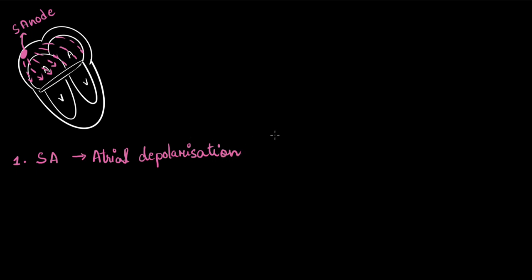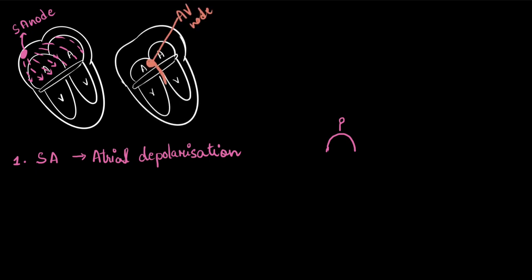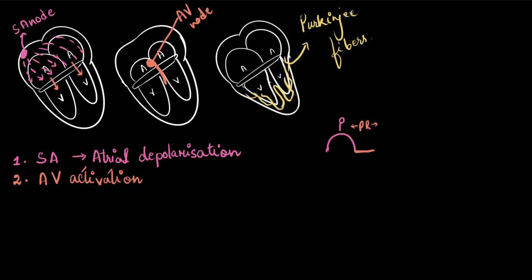Now, this event is shown by the electrocardiograph as an inverted U-shaped curve. We call it the P wave. Now, after the atrial depolarization, the next event is the AV node activation. And this activity is shown by the electrocardiograph as a single straight line. Okay? And this straight line is called the PR segment. From P to R. And where is R? We will get to see in the next cardiac event.